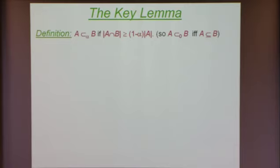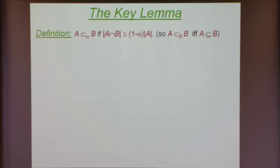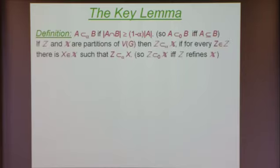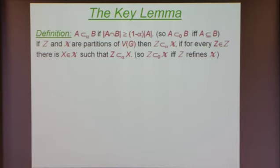Now we arrive at the key definitions. I say that A is alpha-contained in B if B contains at least one minus alpha of the elements of A — i.e., the intersection of A and B contains at least one minus alpha of A. For example, A is zero-contained in B simply if A is contained in B. I generalize this to two partitions: I say that partition Z is alpha-contained in partition X if every cluster of Z is alpha-contained in some cluster of X. For example, Z is zero-contained in X if and only if Z is a refinement of X.